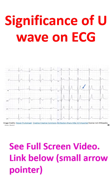A negative U wave is considered to be highly specific for heart disease and is associated with other abnormal findings on ECG in 90% of cases. Discordant U wave inversion with upright T is also thought to represent myocardial ischemia.